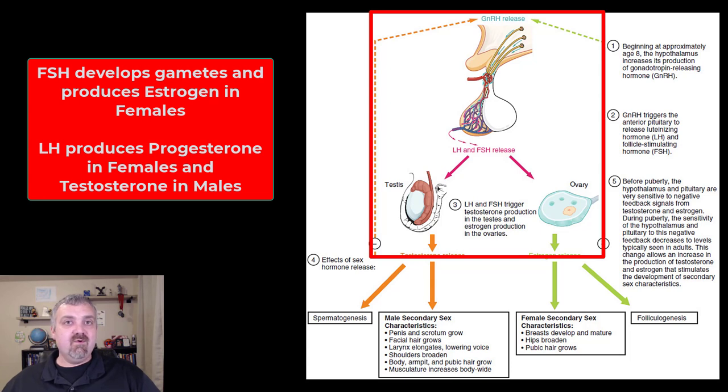In males, follicle-stimulating hormone is going to lead to spermatogenesis or the production and maturation of sperm.